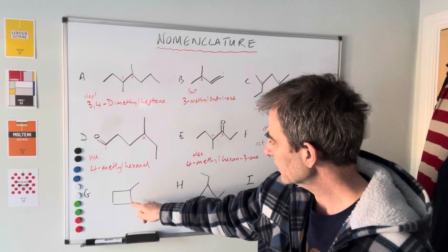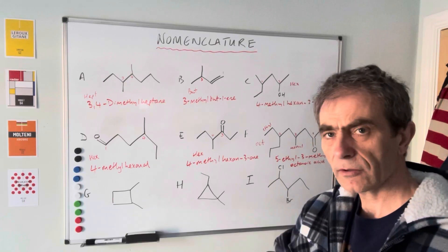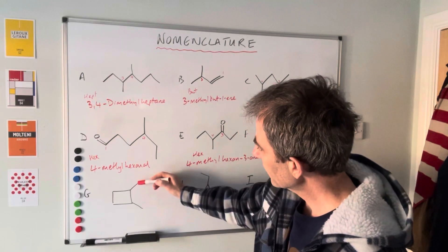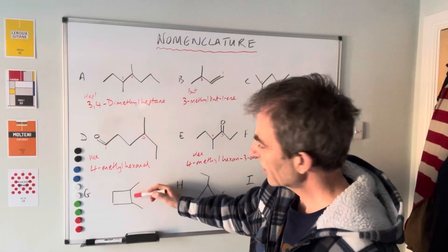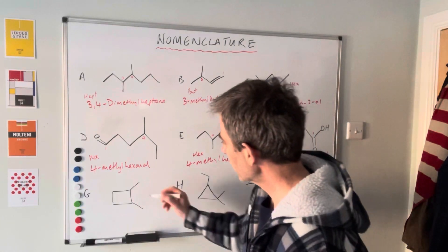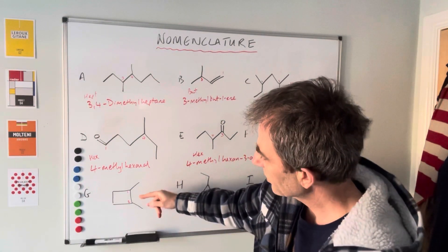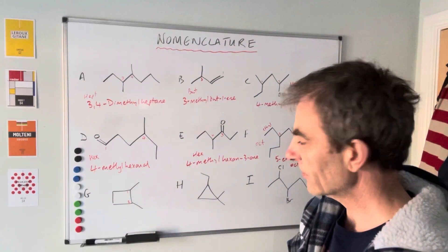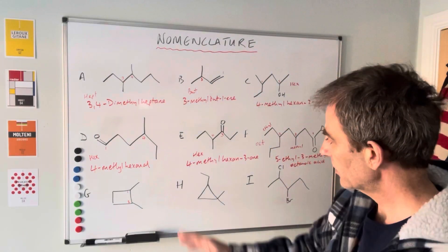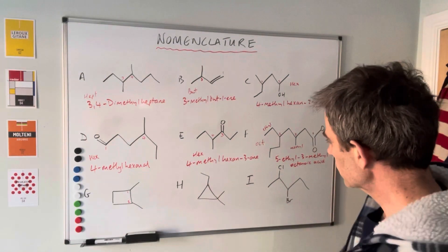Moving on to the final row — we've got our first cyclic compound. This is a ring of four, so it's cyclobutane. We've got two methyl groups on adjacent carbons, so we call one of them carbon one and the adjacent one carbon two. This is called 1,2-dimethylcyclobutane.